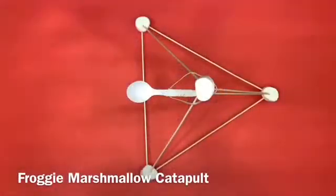Today we're going to make our very own froggy marshmallow launcher. All you need to make a marshmallow launcher catapult is four large marshmallows, seven skewers, a thin rubber band, a plastic spoon, masking tape, and lastly a gummy or rubber froggy.